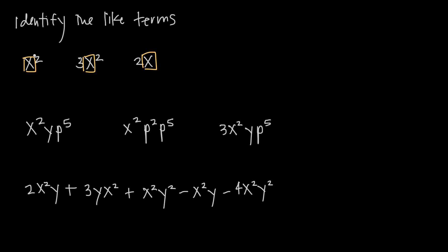In my first term, I have x to the second power. In my second term, I have x to the second power. In my third term, I have x to the first power — this is an implied x to the 1. So what that tells me is that these first two terms, x squared and 3x squared, are like terms because they both have x squared. They are unlike this 2x to the first power.